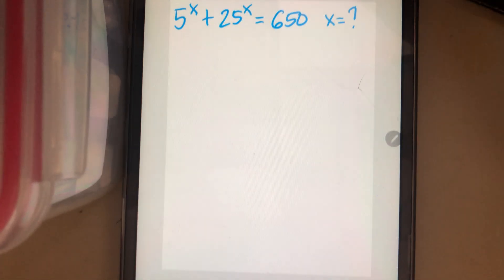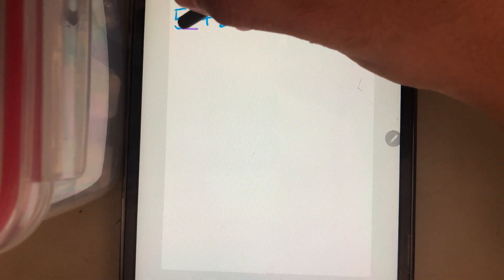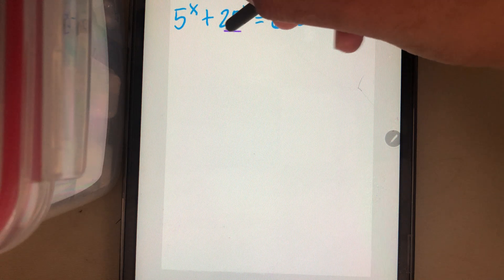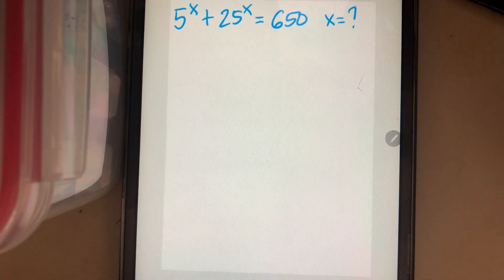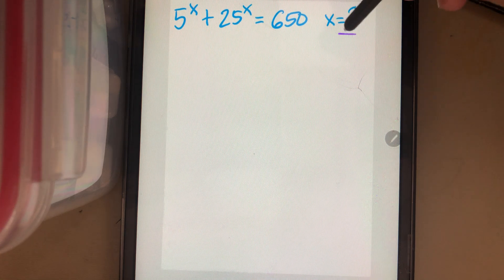In this video, we are given an equation 5 power x plus 25 power x is equal to 650 and we have to find the value of x.